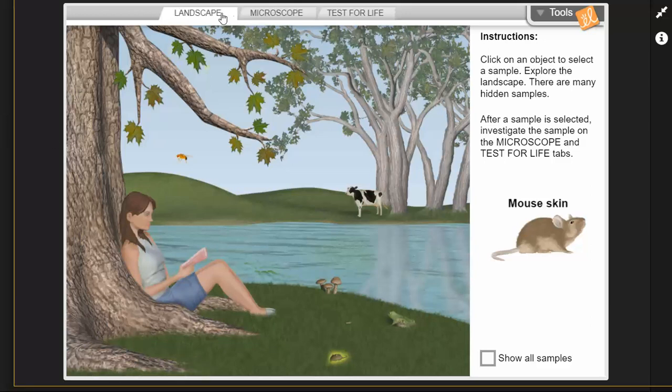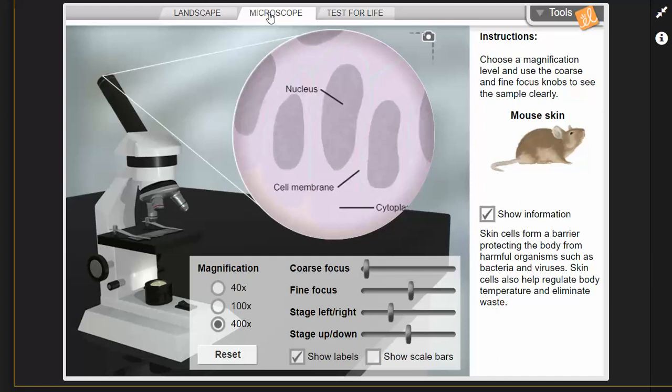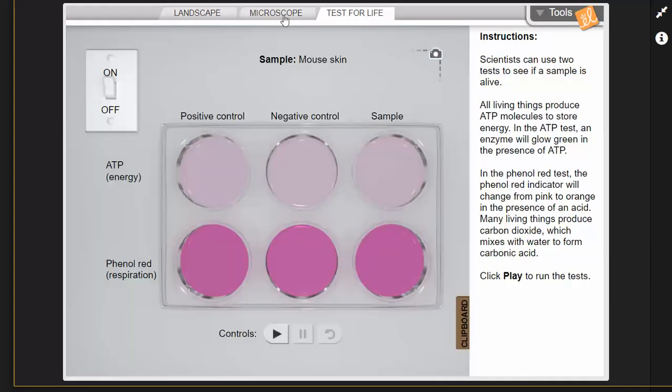You'll also see across the top you have different tabs to use. We're going to be primarily using the landscape and the microscope tab for this one, and then at the end of class the last section or the last activity we'll get into this test for life tab.